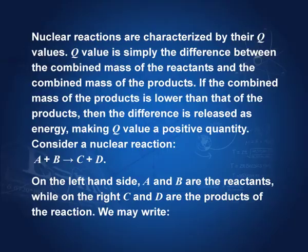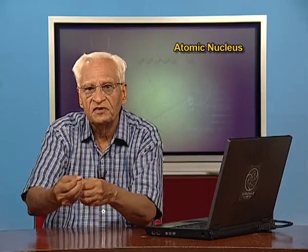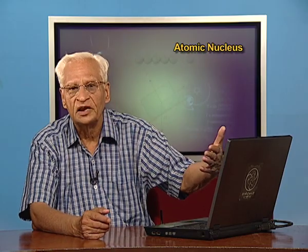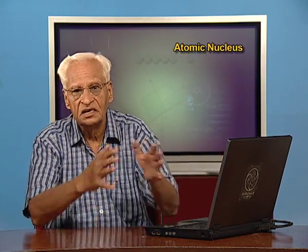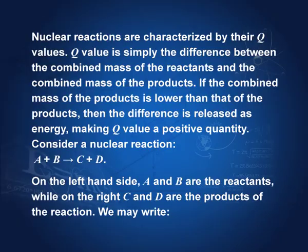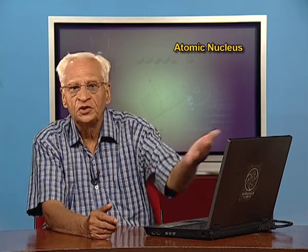Nuclear reactions are characterized by their Q values. The Q value is simply the energy released in the process — the difference between the combined mass of the reactants and the combined mass of the products. In the reaction A + B → C + D, the difference in mass of the reactants and products multiplied by c² gives the Q value.